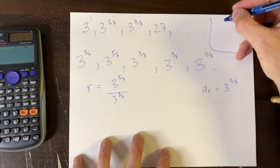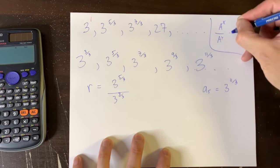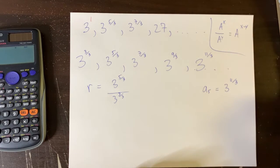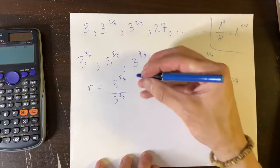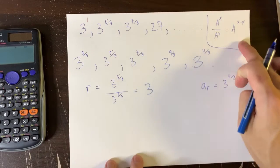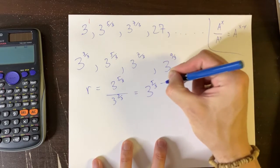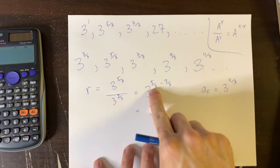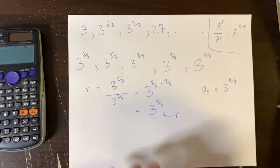Now, recall your rules from algebra. Remember that A to the X over A to the Y is just A to the X minus Y. And I want to do that here now. I have the same base, so I'm going to take the top minus the bottom power. So this, according to that rule, would just be 3 to the power of 5 thirds minus 3 thirds. And 5 thirds minus 3 thirds is 2 thirds. This is your common ratio.